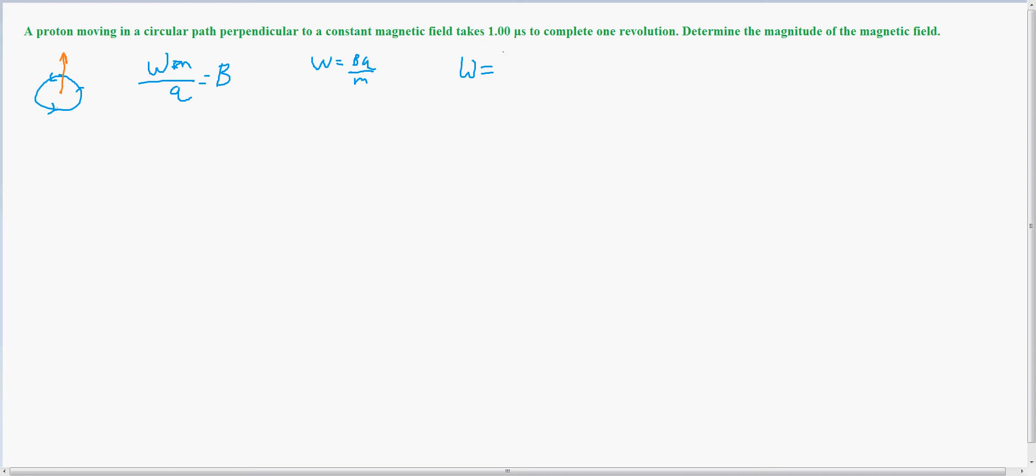And we know the period which is right here. So we have 1e to the negative 6 divided by 2pi for w.